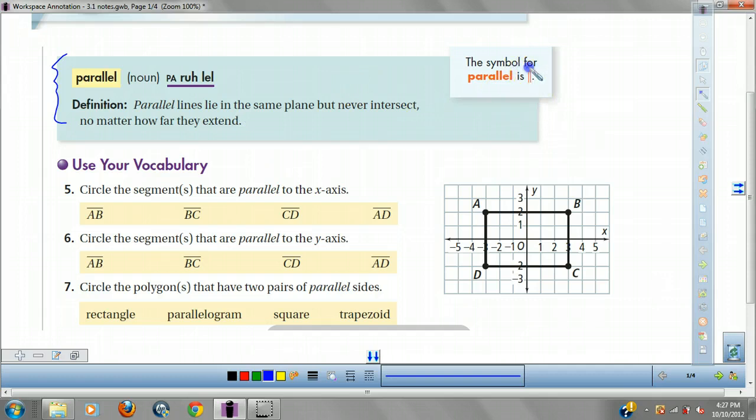And whenever you see this symbol right here, that says those lines are parallel. Whenever I think about parallel, I think of train tracks. Because if you're two train tracks and those are parallel, sometimes you'll see arrows on them too that denote they're parallel. And they have to be parallel because if they ever hit, the train would get derailed, right? So parallel lines go on forever, never cross.